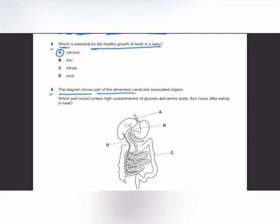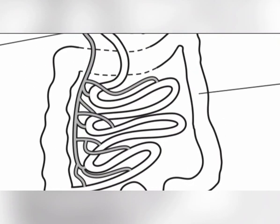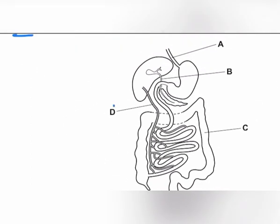MCQ number 9: the diagram shows part of the alimentary canal. Which part contains the highest concentrations of glucose and amino acids four hours after eating a meal? When we consume a meal, it is digested and absorbed into the blood. The blood vessel carrying nutrient-rich blood is the hepatic portal vein, which carries it to the liver. The hepatic portal vein (D) contains the highest concentration of glucose and amino acids. The answer is D.